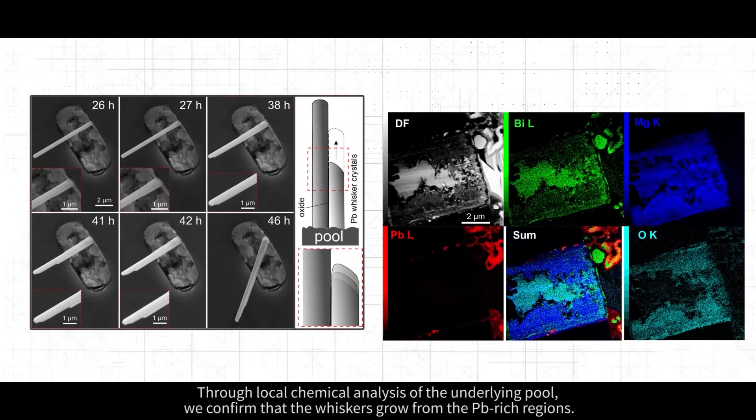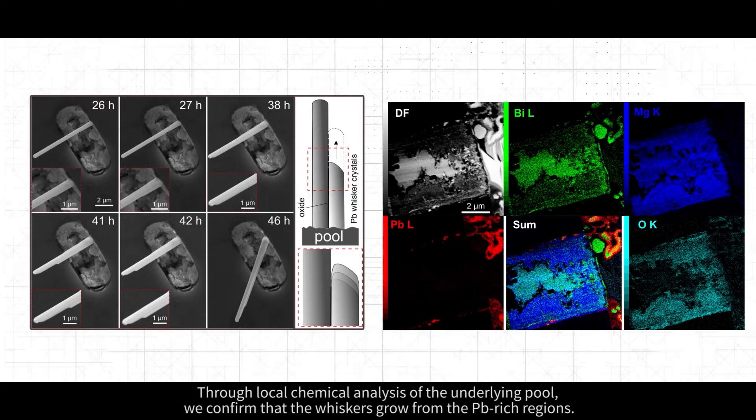Through local chemical analysis of the underlying pool, we confirm that the whiskers grow from the Pb-rich regions.